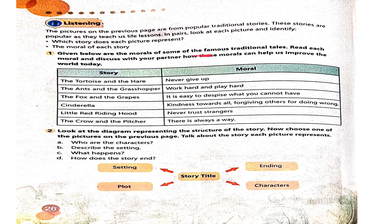Given below are the morals of some famous traditional tales. Read each moral and discuss with your partner how these morals can help us improve the world today. The Ants and the Grasshopper: Work hard and play hard. The Fox and the Grapes: It is easy to despise what you cannot have. Cinderella: Kindness towards all; forgiving others for doing wrong. Little Red Riding Hood: Never trust strangers. The Crow and the Pitcher: There is always a way.